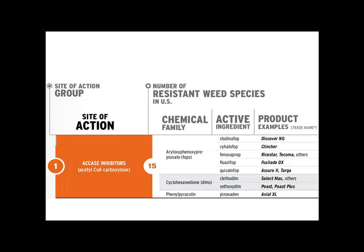This mode of action includes Group 1, also known as the ACCase inhibitors. Group 1 and ACCase inhibitors are the site of action. Currently 15 different weed species are resistant to this site of action. This site of action contains 3 different chemical families, a number of active ingredients, along with an even greater number of products that correspond to those active ingredients. The take home from this chart is you can be spraying any of these products, but you are actually only spraying from this one site of action, which will increase the chance of developing herbicide resistant weeds.